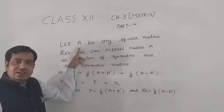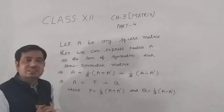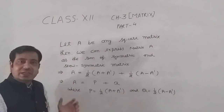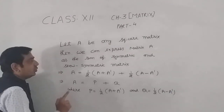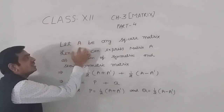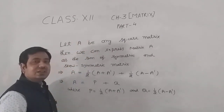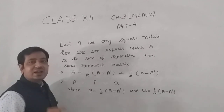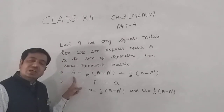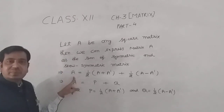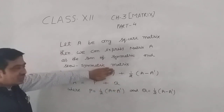Now, here is another problem. We have A as any square matrix and we have to express A as a sum of two matrices, in which one is symmetric and the second should be skew symmetric.